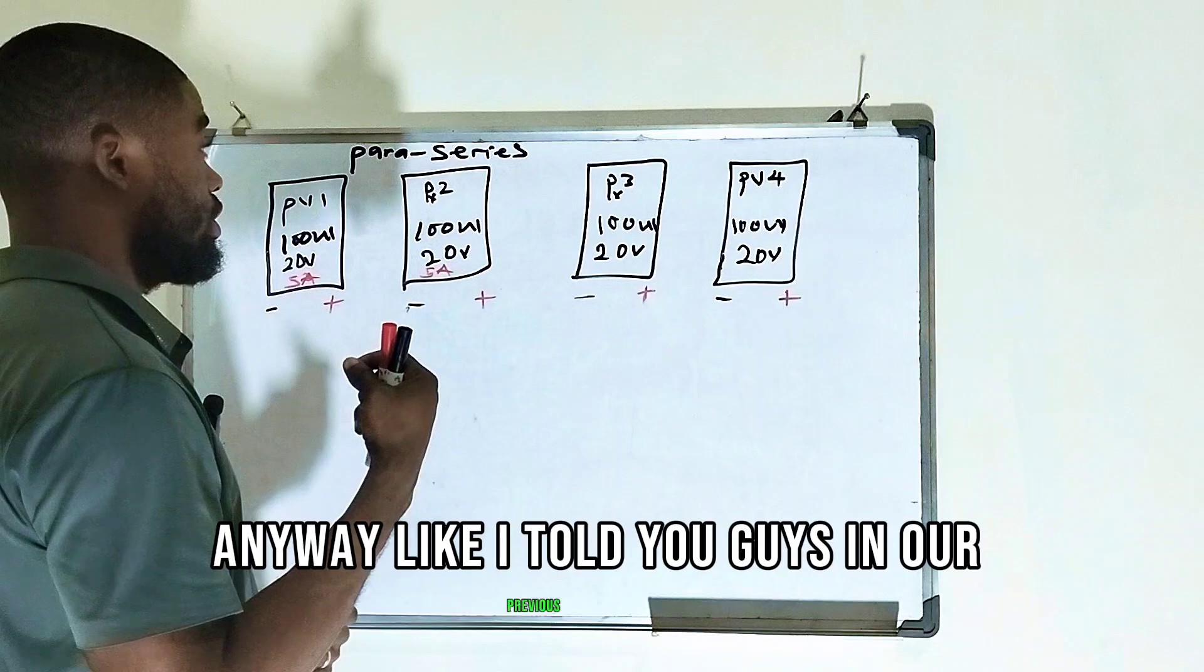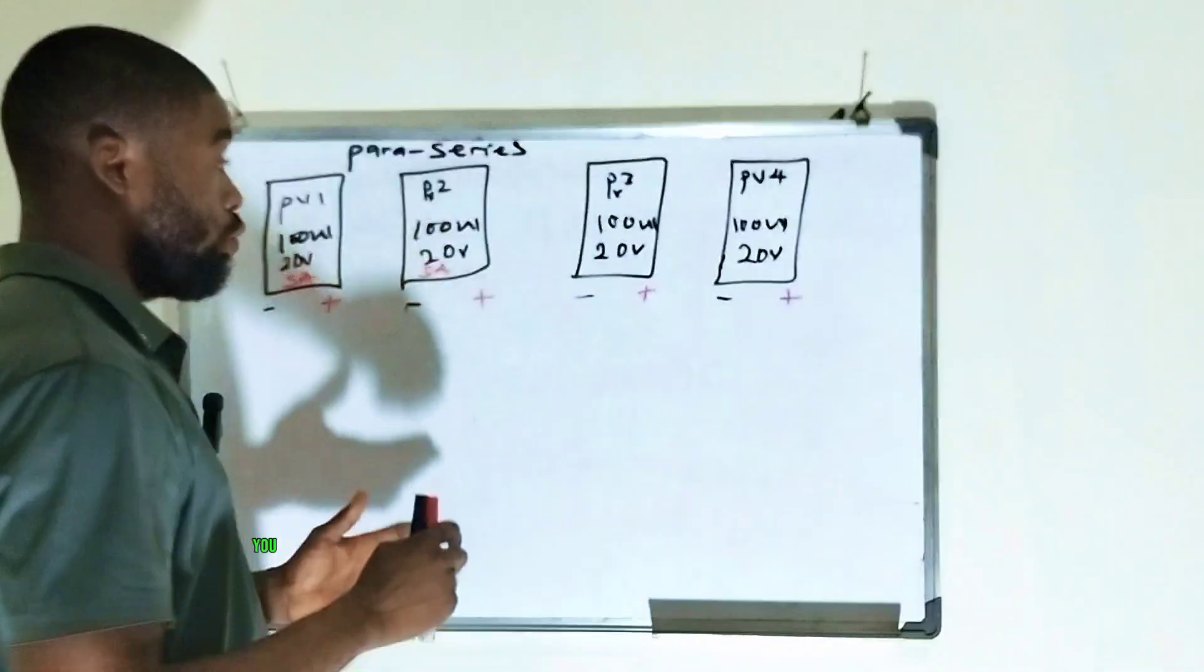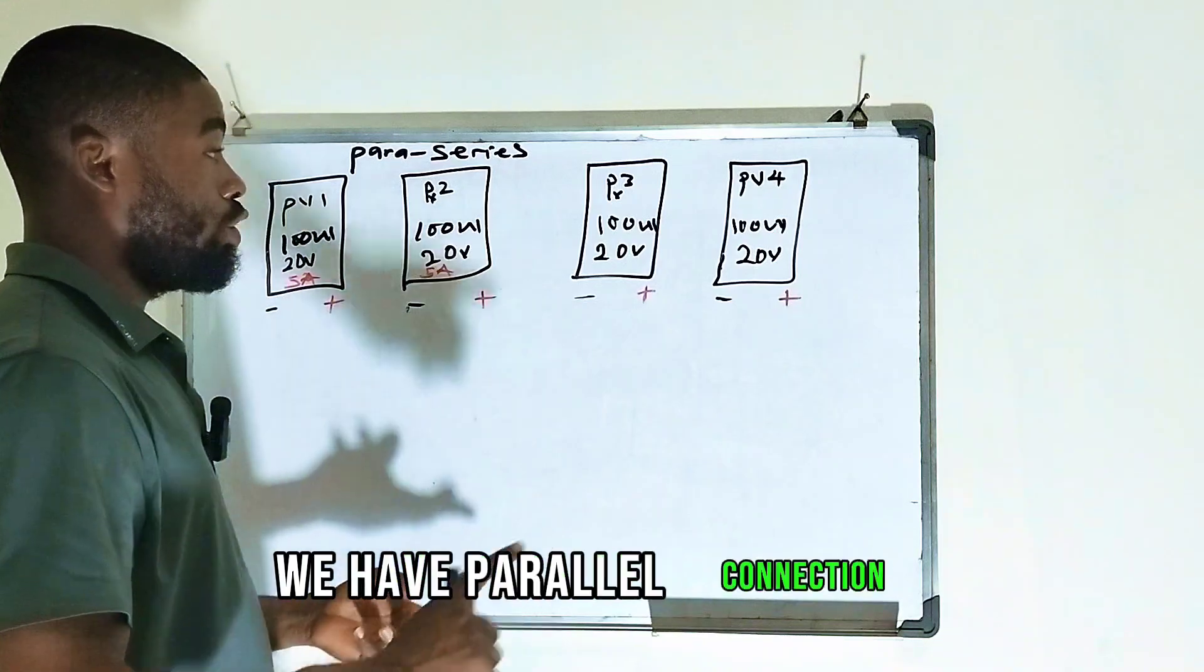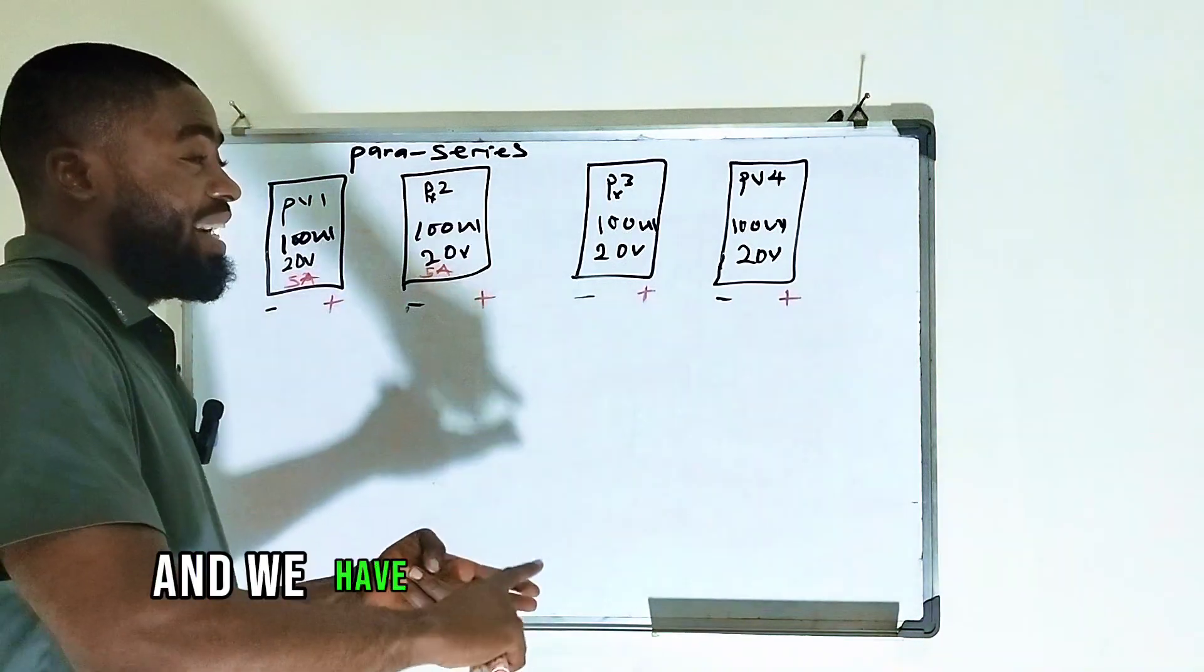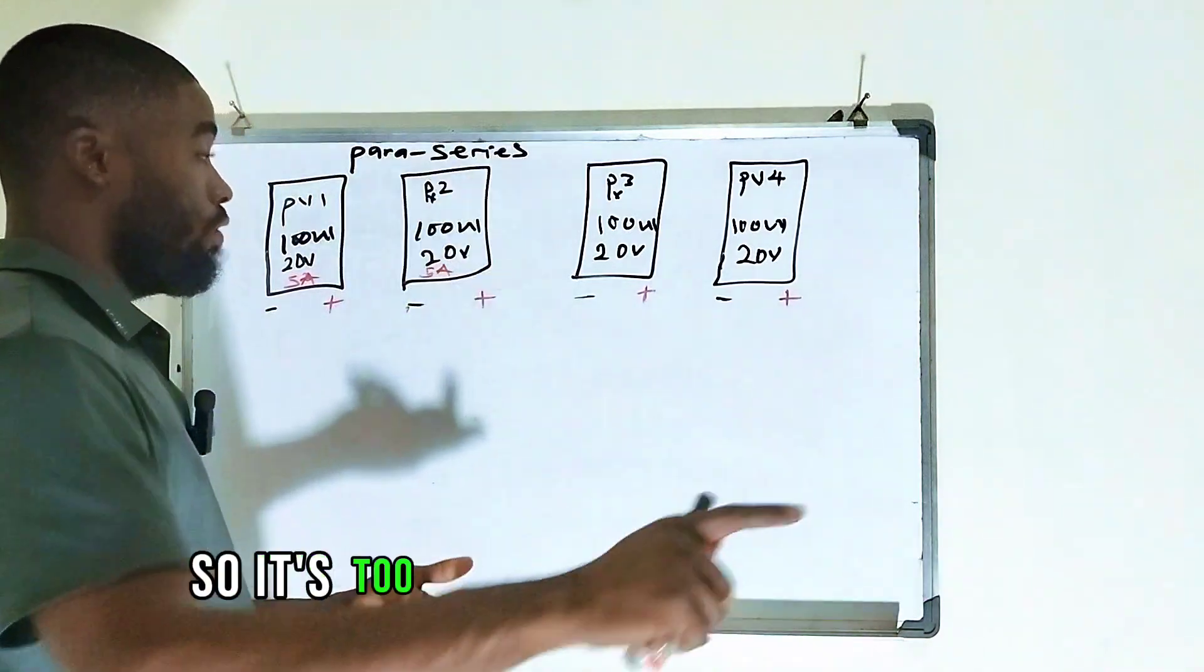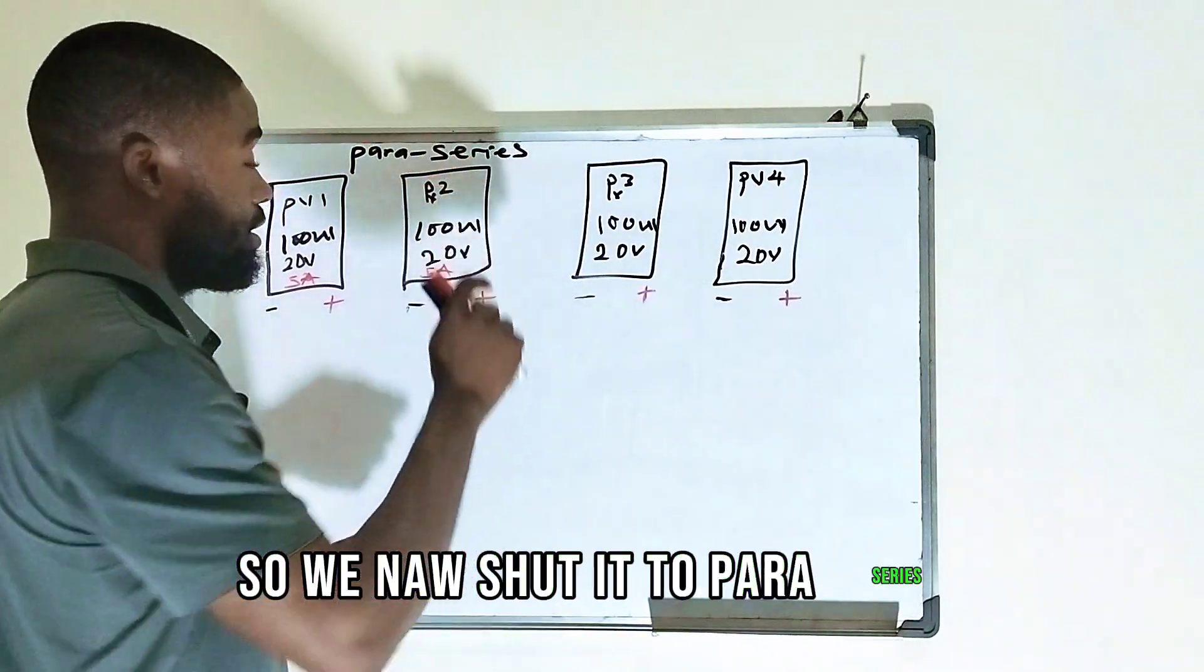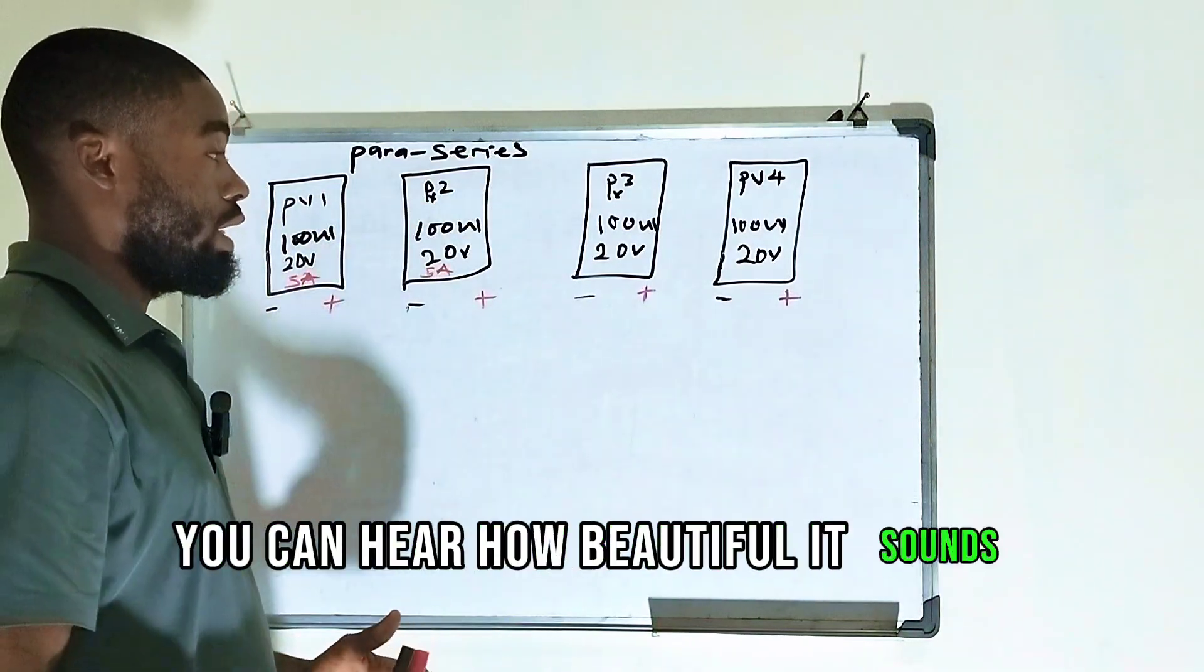Anyway, like I told you guys in our previous class, Paraseries came from the word Parallel. We have three types of connection: Parallel connection, Series connection, and Parallel Series connection. So it's too long for me to pronounce, so when I shorten it to Paraseries, you can hear how beautiful it sounds.